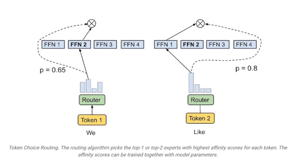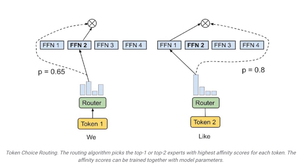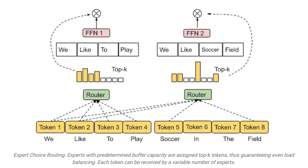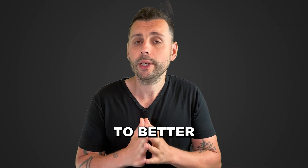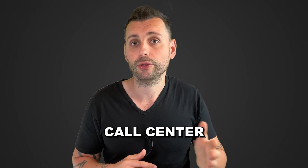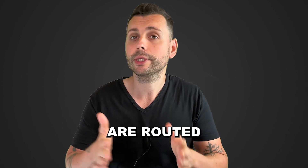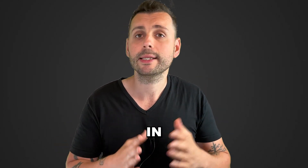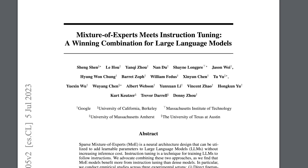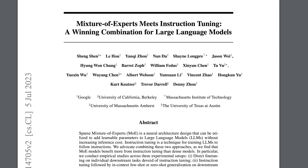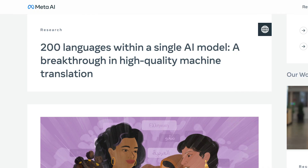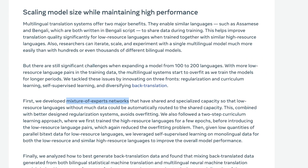Rather than employing the entire network for every task, MoE divides the network into different sections or experts, each of which becomes activated based on specific input examples. To better understand this, let's say you're running a call center, and different issues are routed to different agents who specialize in handling them. Similarly with MoE, you route your input to the specific expert — a neural network that is best equipped to handle it — and you get the power of multiple specialized models working together.